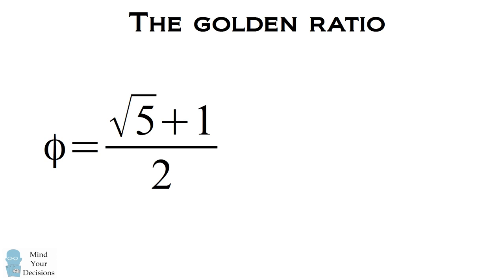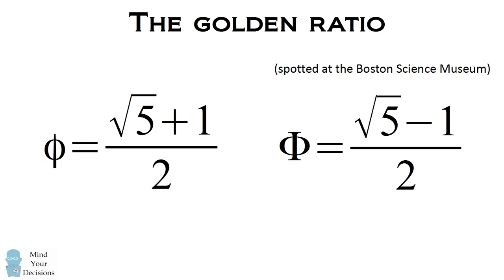The golden ratio is a very famous mathematical constant. Recently, a 15-year-old at the Boston Science Museum saw the golden ratio was written as the square root of five minus one over two.